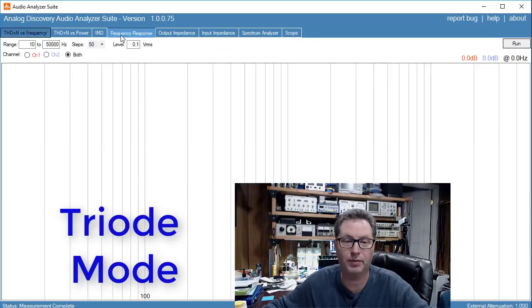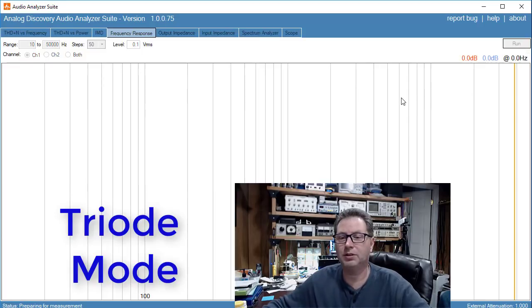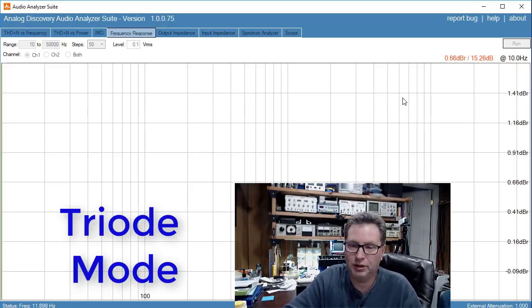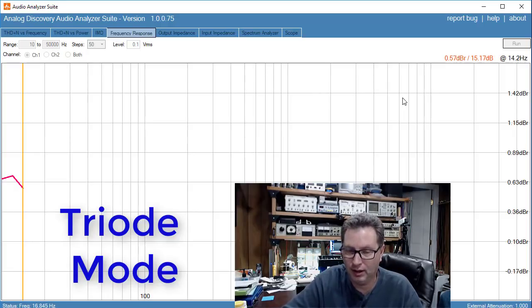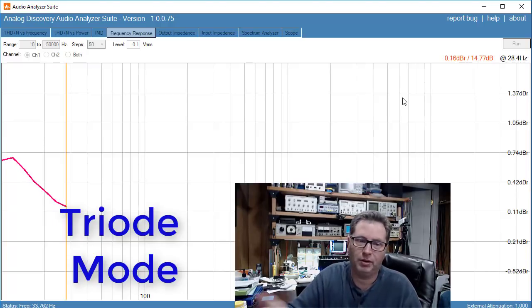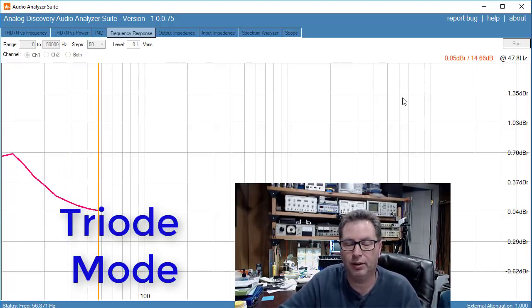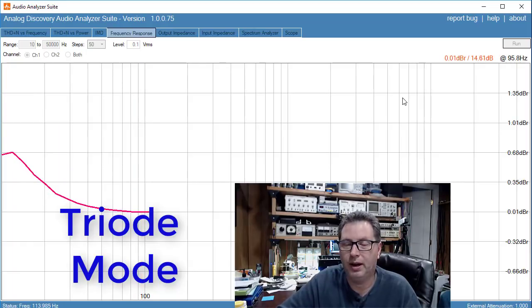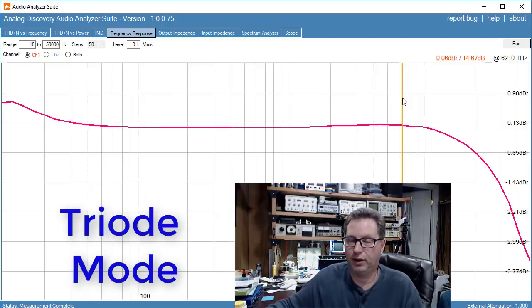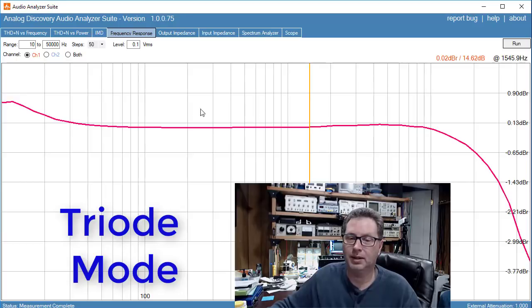All right, so our second test here will be frequency response. Basically what you're doing is you're feeding the amplifier and measuring the amount of gain coming on the output compared to the input across a different set of frequencies, starting with 20 hertz all the way up in this case to 50 kilohertz. The previous test we ran was really percent of distortion versus frequency. In other words, we swept across the entire audio frequency range and we measured distortion along the way.